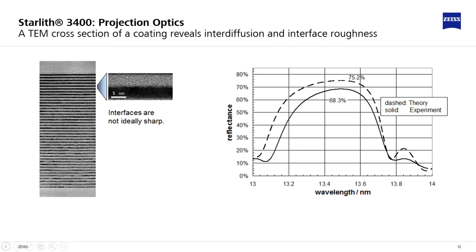This is partly caused by intermixing due to kinetic energy of the deposited particles, hitting the surface during the deposition process and partly by the chemical forces favoring the formation of molybdenum silicides.